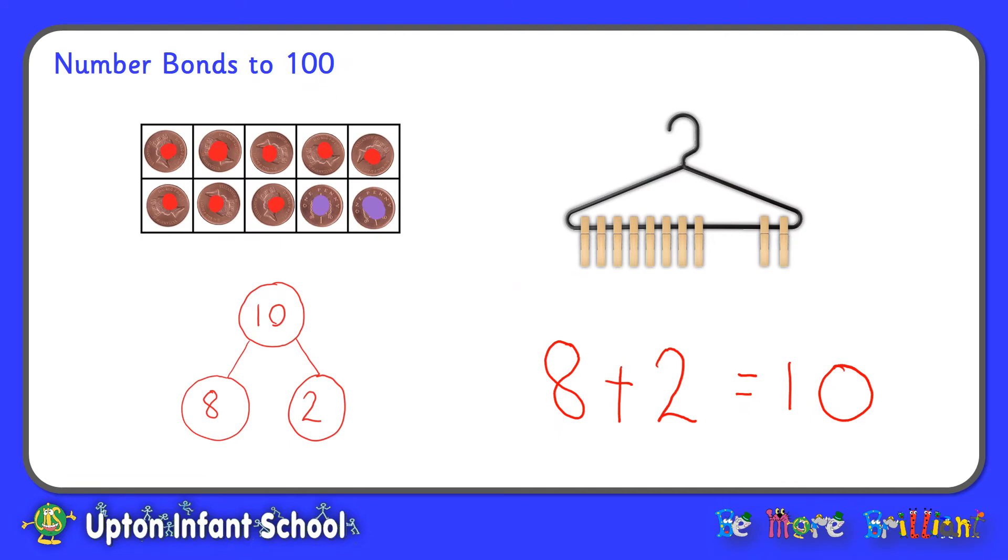So let's have a quick recap of number bonds to 10. There are lots of different ways that you could represent number bonds to 10, and all of these pictures here are ways of showing that 8 and 2 together make 10. 8 and 2 are number bonds to 10.